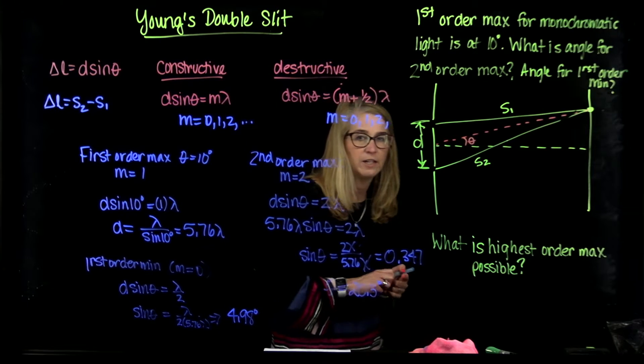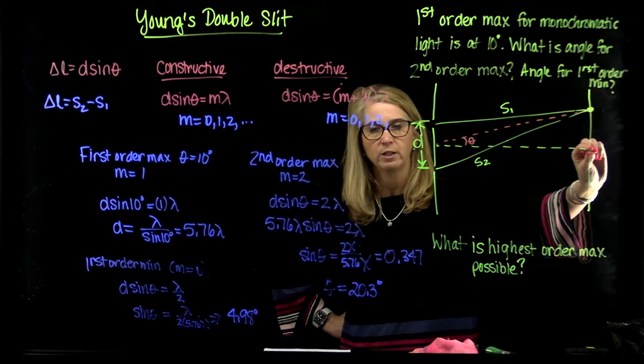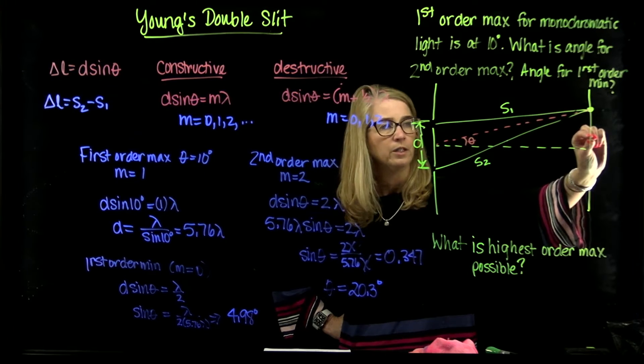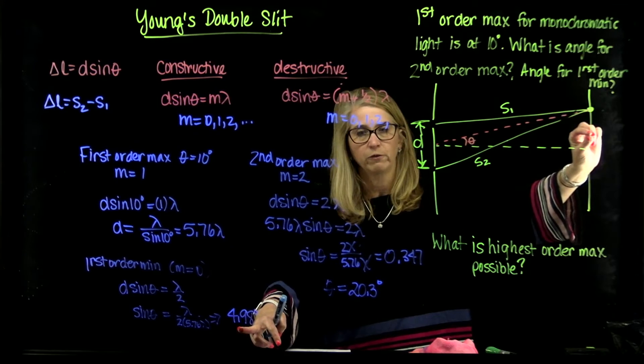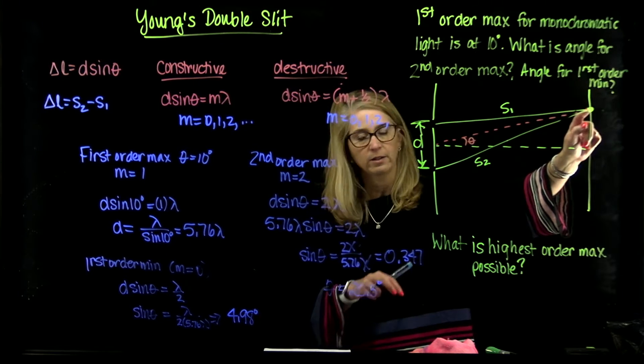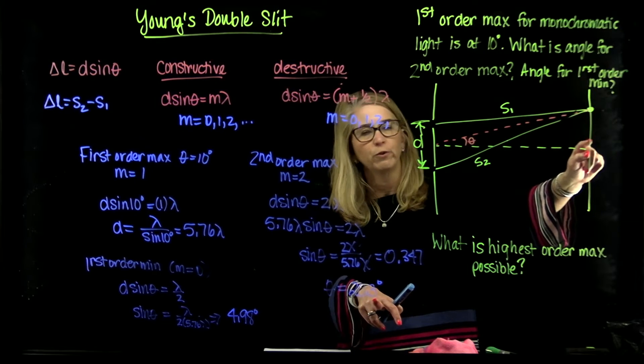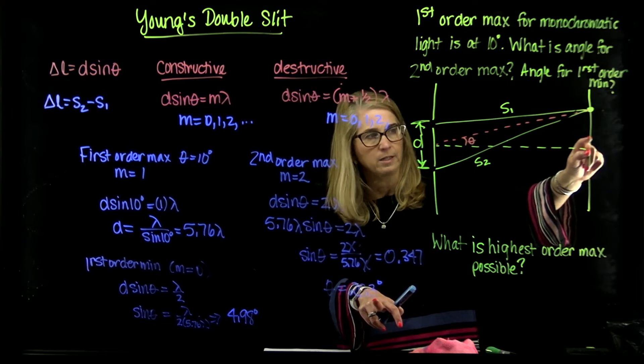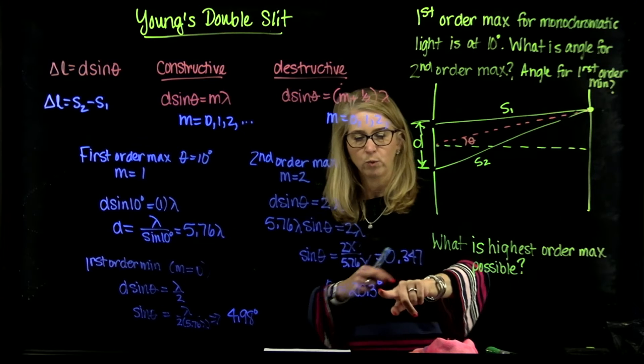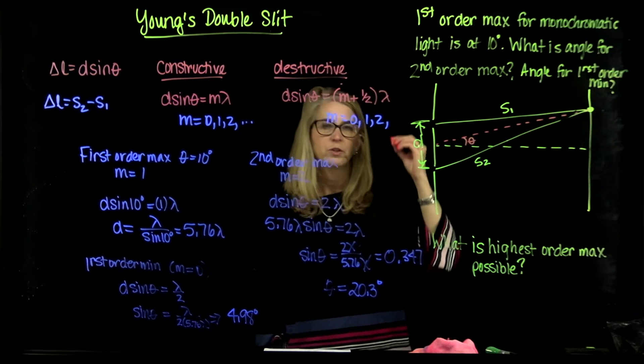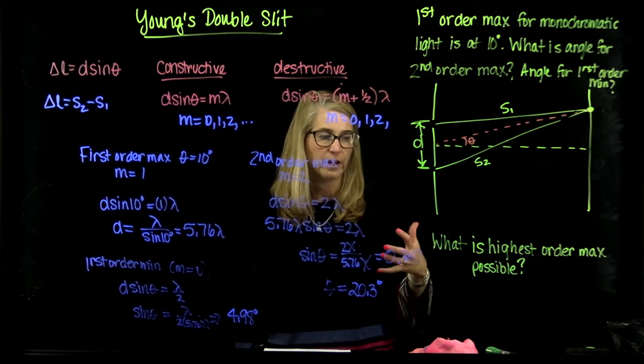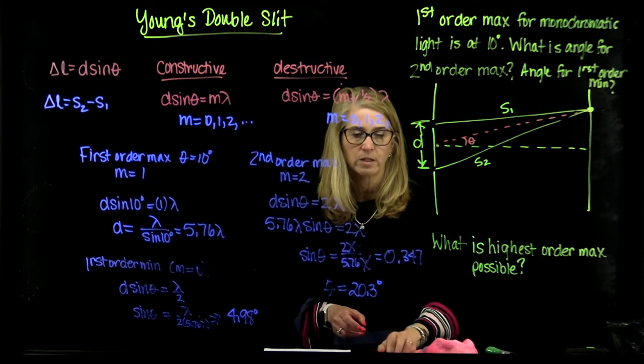So what we have here is the idea is we know that there will be a bright spot at theta equals 0. At 10 degrees is the first bright spot, but somewhere pretty much in between those at 4.98 degrees is the first total minimum. And then the second order, the next bright spot is at 20.3 degrees. So two bright spots are at 10 degrees, 20.3, and we found that there's a dark spot at 4.98. We didn't actually find all of them, but that's how we found the ones that we were asked for.